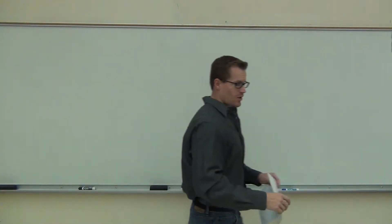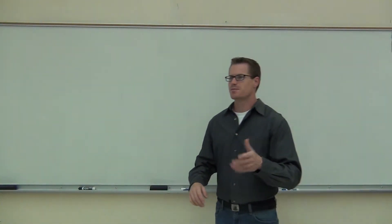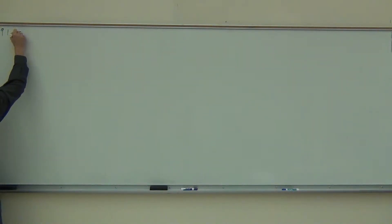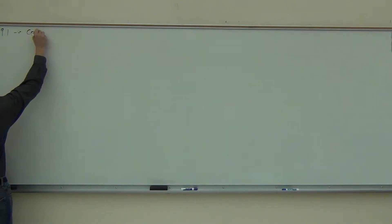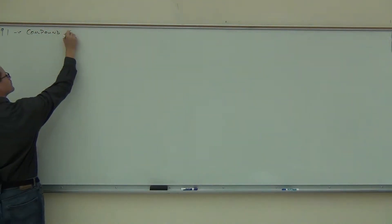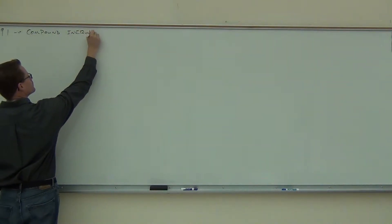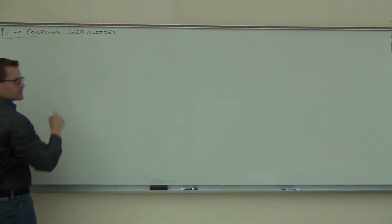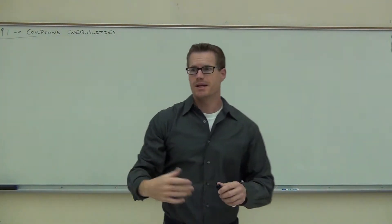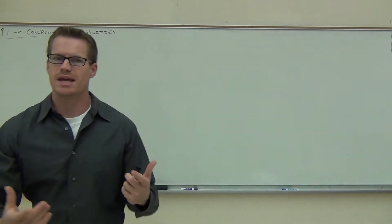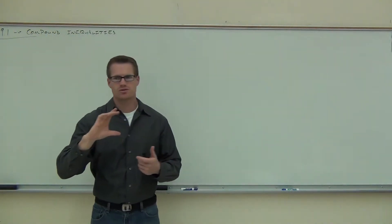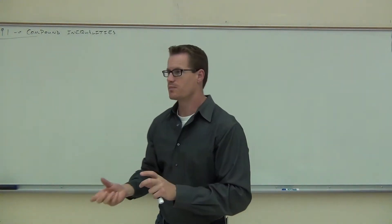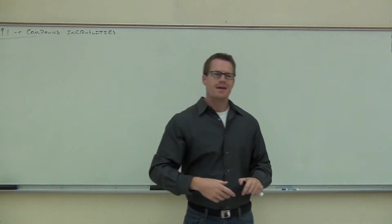All right, so let's get started on 9.1. We're going to be talking about something called compound inequalities. Somewhere in your math career, you talked about inequalities. Those are things that weren't equations — they had either a less than, greater than, less than or equal to, or greater than or equal to. They said these numbers aren't necessarily equal. One might be bigger than the other, but we can still make statements about them. That's what an inequality is.